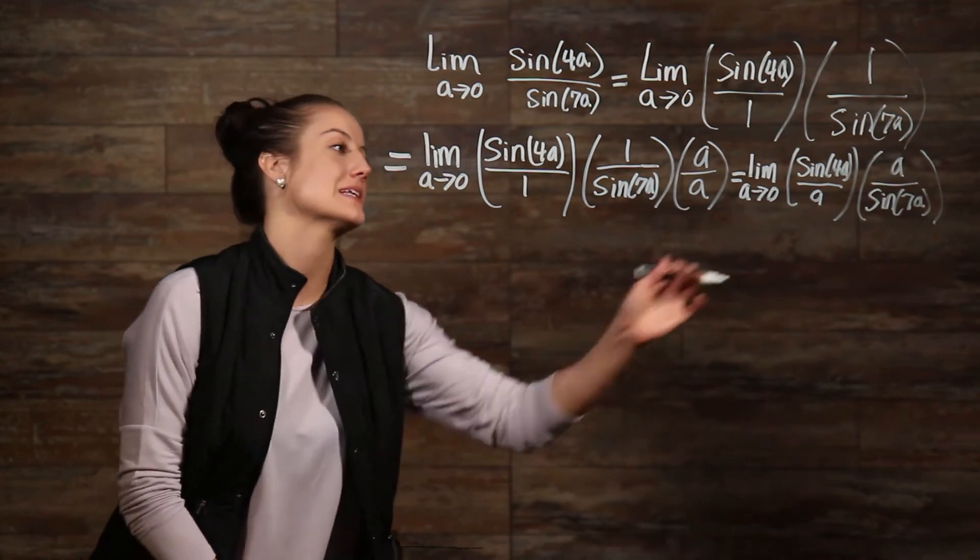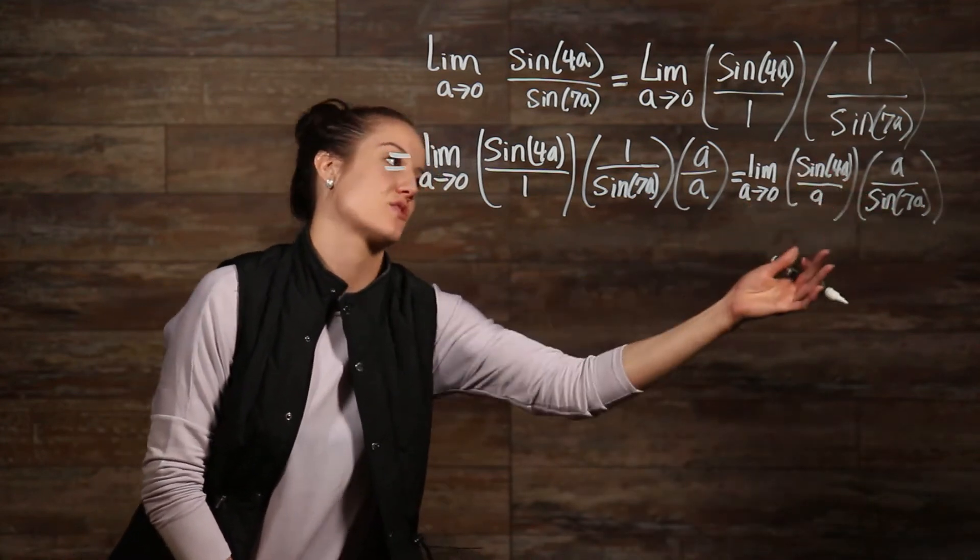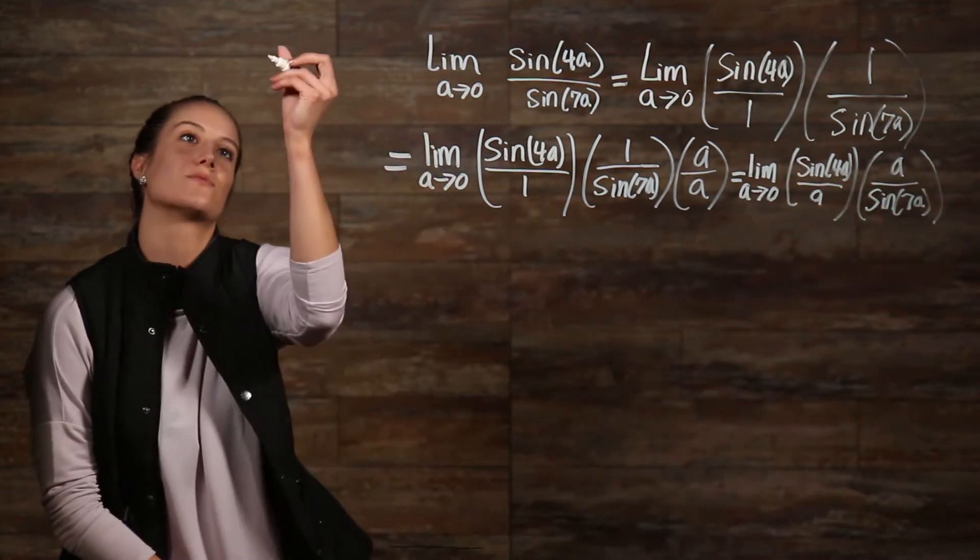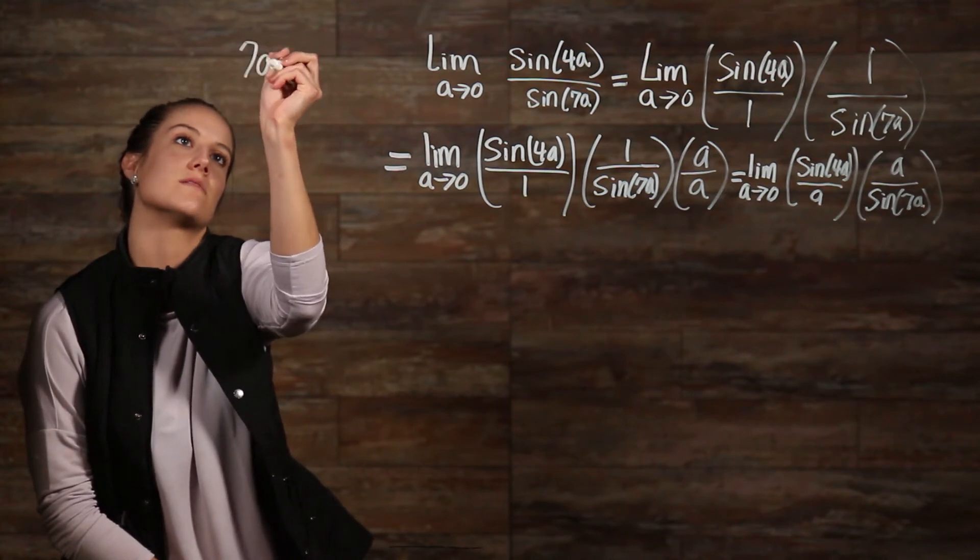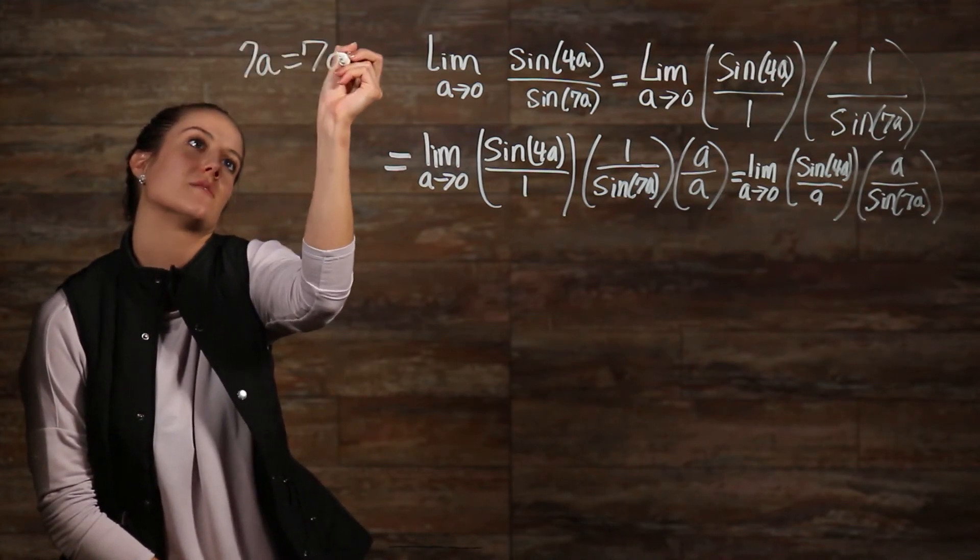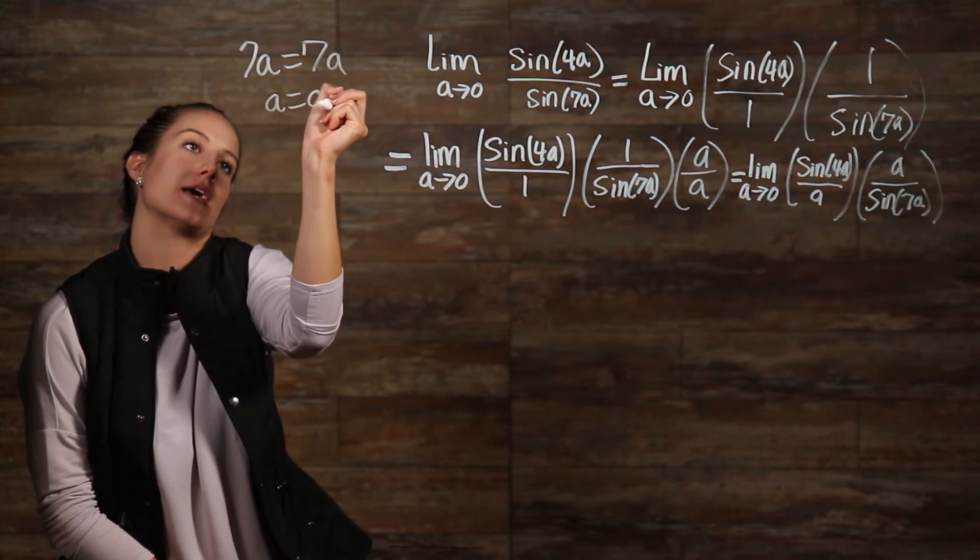So, what we need to happen now is we need to have the same coefficient in front of our a's right here. So you guys know that if we solve for the inequality 7a is equal to 7a, we'll get a is equal to a.